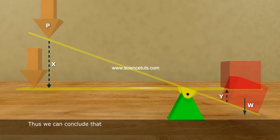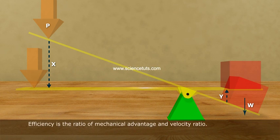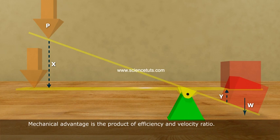Thus, we can conclude that efficiency is the ratio of mechanical advantage and velocity ratio. Mechanical advantage is the product of efficiency and velocity ratio.